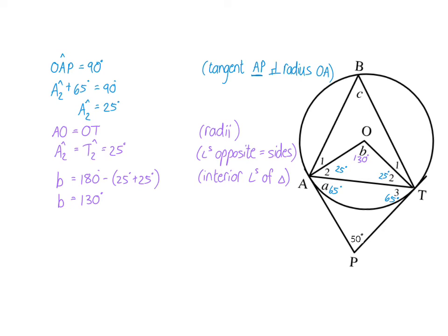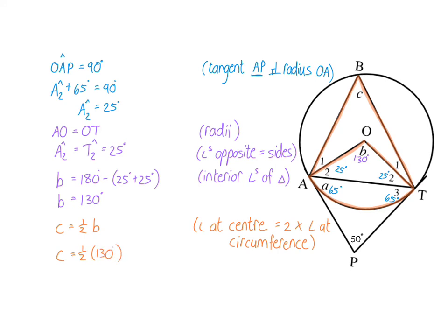Lastly, we calculate angle C. Angle C is an angle on the circumference subtended by arc AT. That same arc subtends angle B at the center. So angle C is half the size of angle B — half of 130° — meaning angle C equals 65°.